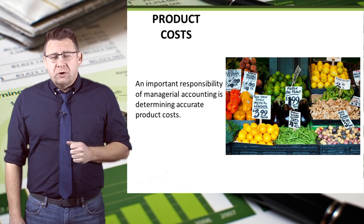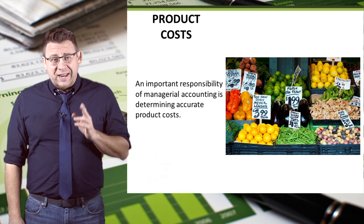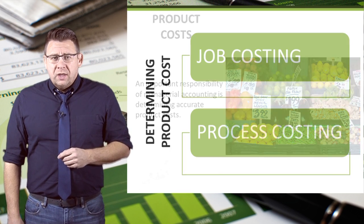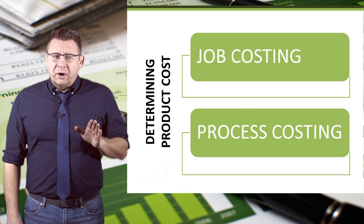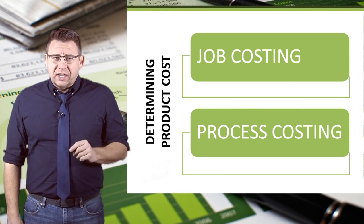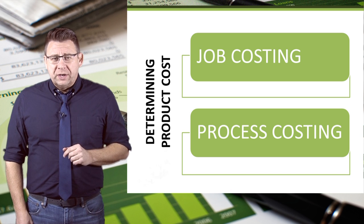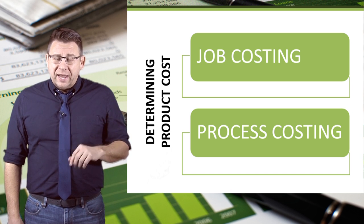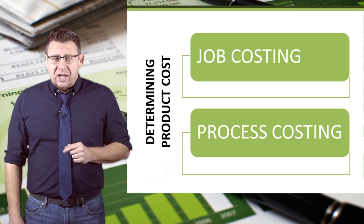In fact, I worked for a small produce company once that had this very problem. There are two primary ways product costs are determined: job costing and process costing.